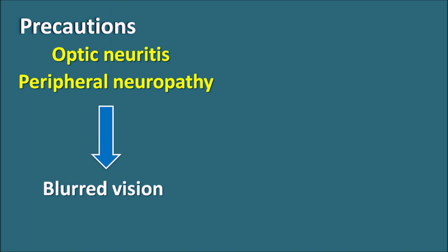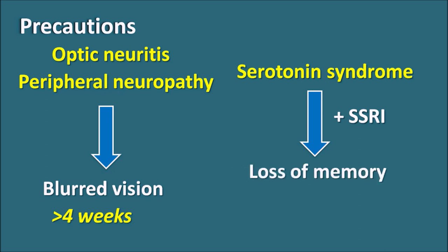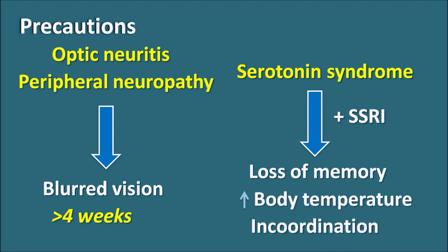Because optic neuritis and peripheral neuropathy can cause blurred vision and potentially lead to loss of vision if unrecognized, Linezolid is restricted to use for less than 28 days. Regarding serotonin syndrome: this occurs when Linezolid is combined with SSRIs, resulting in increased monoamine levels that can cause loss of memory, increased body temperature, and mental incoordination. It is always advisable to avoid SSRIs with Linezolid.